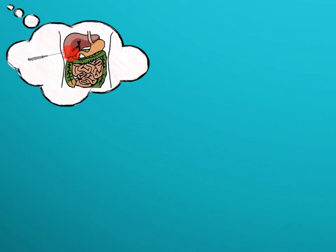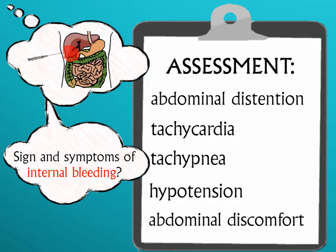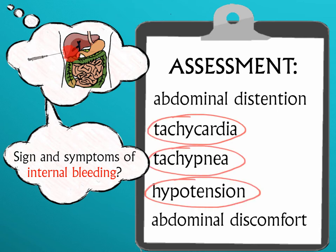For example, taking the liver biopsy question again, if you were asked what symptoms you expect to see if there is a complication from the procedure, you should be able to choose assessments that reflect signs of bleeding like tachycardia, hypotension, and tachypnea — all signs of internal hemorrhage. Abdominal distension and discomfort could also indicate bleeding, but it is a nonspecific, or what we call a probable versus an absolute sign.